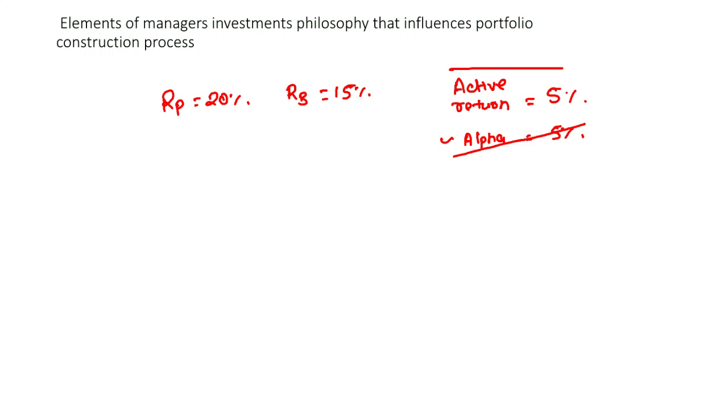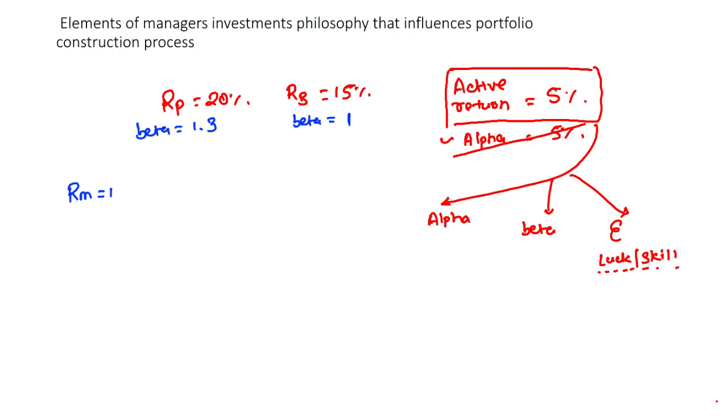Active return and alpha are not the same concept. The difference is that this active return can be further broken down into three parts: some part is your genuine alpha, some part is beta, and some part is the idiosyncratic part, the unsystematic part, which could be assigned to luck or skill, and there is no easy way to break that into two parts. Let me build an example: the beta of the portfolio is 1.3 and beta of the benchmark is 1. Return on market is 15%, risk-free rate is 5%.